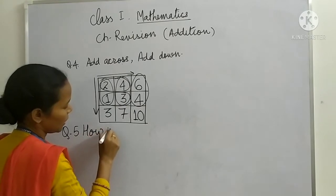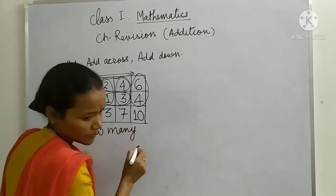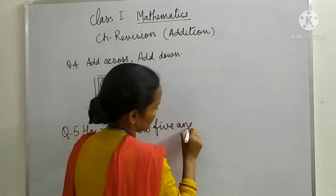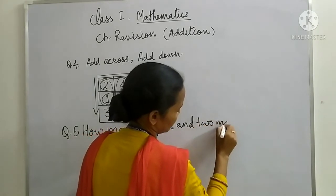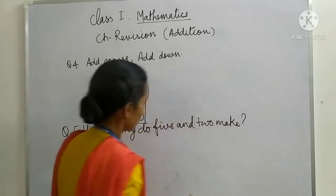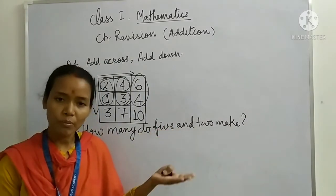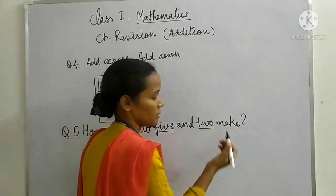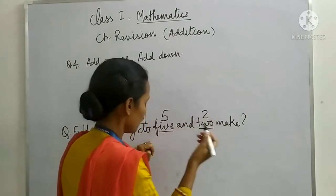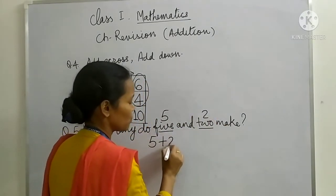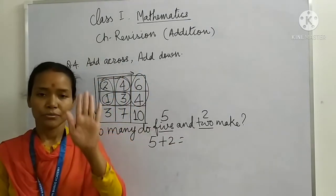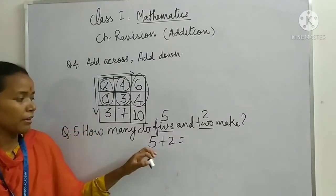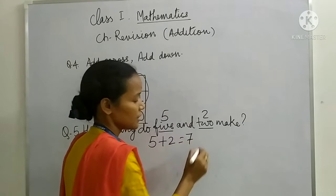How many do 5 and 2 make? It means when you add 5 and 2, what number you get? When you add 5 and 2, which number you get? It is 5 and it is 2. So when we add 5 and 2, what we get? Let's understand. 5 and 2. Counting 1, 2, 3, 4, 5, 6, 7. When we add 5 and 2 what we get? We get 7.